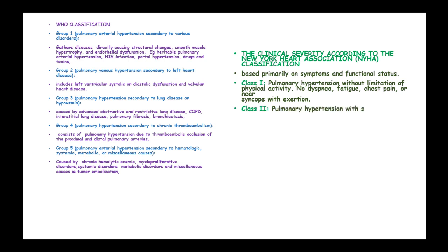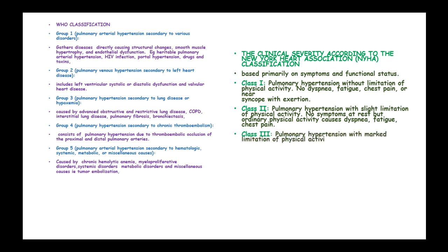Class 2 is pulmonary hypertension with slight limitation of physical activity. There are no symptoms at rest, but ordinary physical activity causes dyspnea, fatigue, and chest pain. Class 3 includes pulmonary hypertension with marked limitation in physical activity. There are no symptoms at rest, but less than ordinary activity causes dyspnea, fatigue, chest pain, and near-syncope.